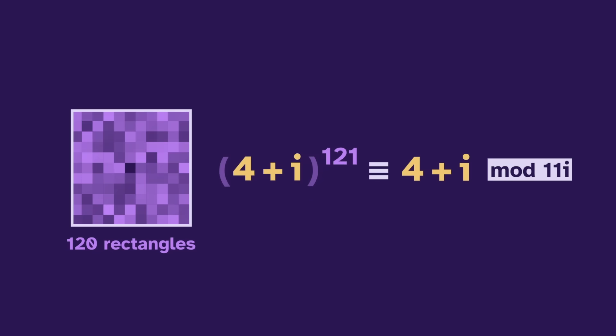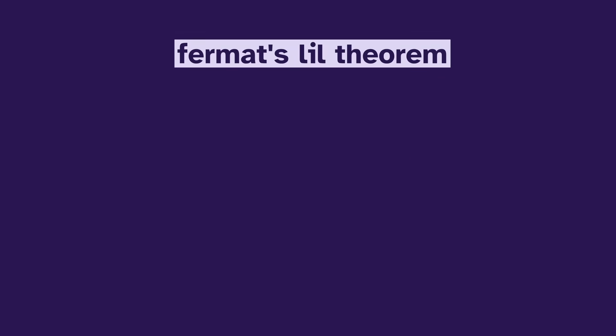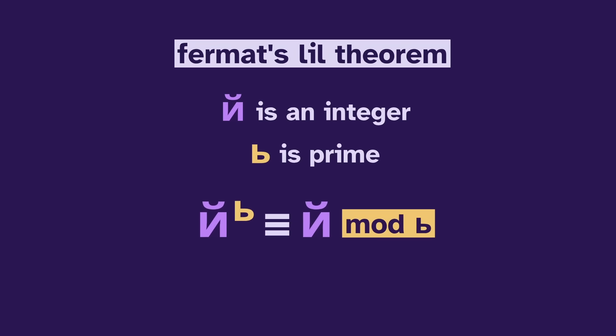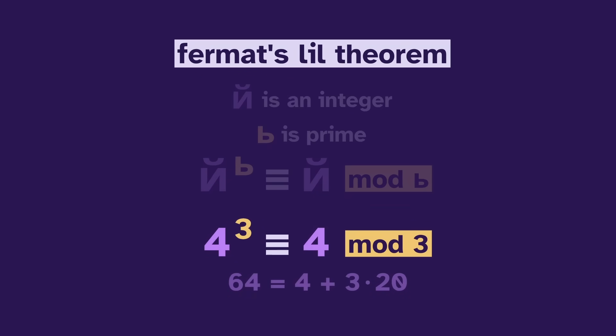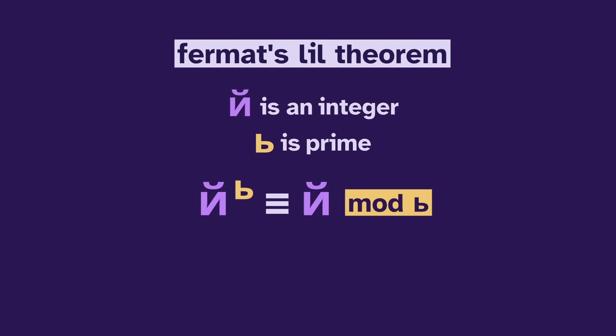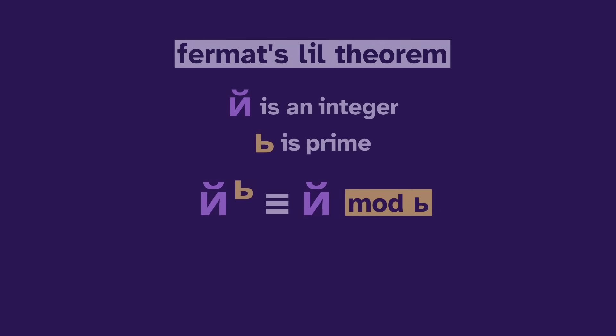These equations all look like Fermat's Little Theorem, which says that if a is an integer and p is prime, then a to the p equals a mod p. For example, 4 to the 3 is 4 mod 3, and also 3 to the 5 is 3 mod 5. In this video, we'll see why this theorem works, and how we can apply it to complex numbers.